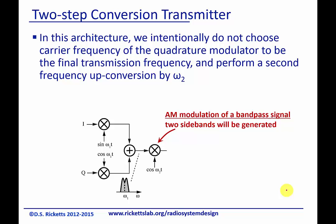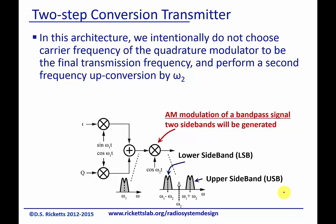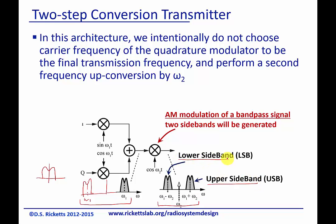And if you remember what happens when we take an AM signal and modulate it from the previous modules, you can see that our baseband signal, which may have started out like this, then moves up to where this is omega-1. And now this entire spectrum is going to be upconverted right around omega-2, and we're left with our upper sideband and our lower sideband. This should be familiar to you from the analog modulation module.